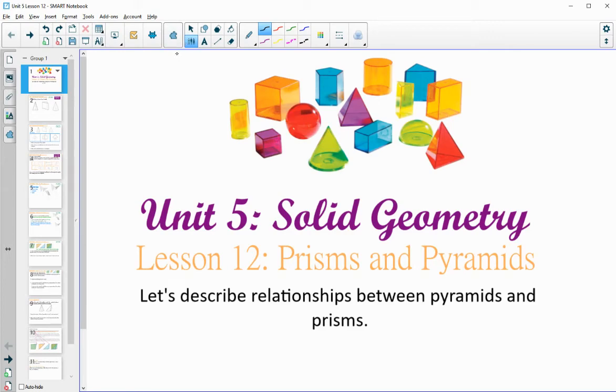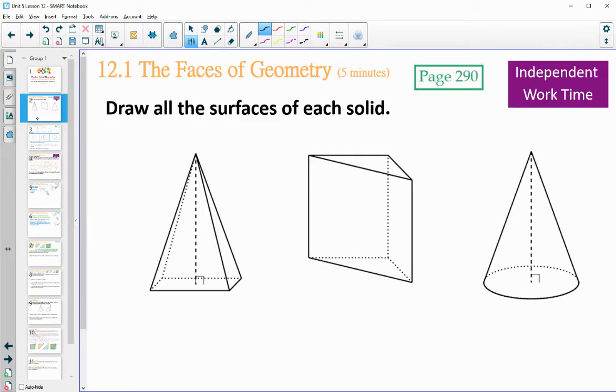In Lesson 12, we're going to look at describing relationships between pyramids and prisms. So go ahead and on page 290, draw all the surfaces that would make up each shape - each of those sides of each of these solids.